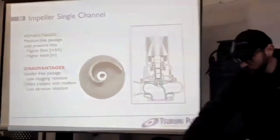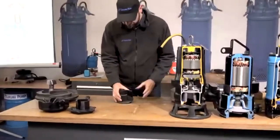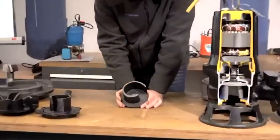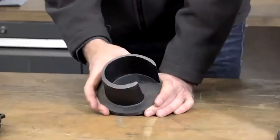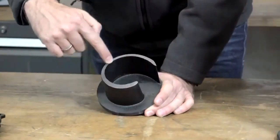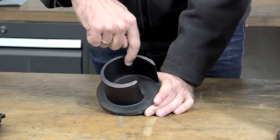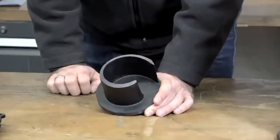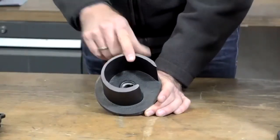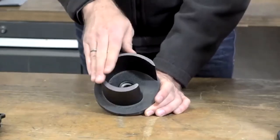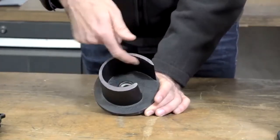Looking at a single channel impeller example: its basic structure is round like every impeller, but it has a single vane going all around. The medium enters the impeller, is accelerated in direct contact with the impeller vane, and is discharged. You can also see why we have less abrasion resistance — the wide area within this impeller is in direct contact with the medium, and abrasive substances will wear away at those direct contact positions.